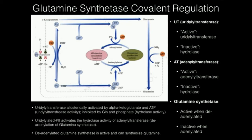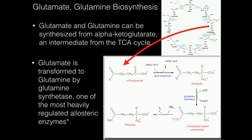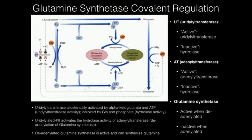The covalent regulation is actually very complicated. Glutamine synthetase is active when deadenylated and inactive when adenylated — meaning it has an AMP attached to it. The process of attaching an AMP to a molecule or protein is called adenylation. So if I adenylate glutamine synthetase, I inactivate it. If the adenylate group is removed — deadenylated — then glutamine synthetase is active.